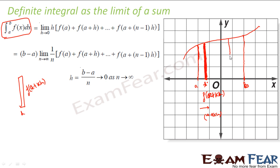We will take more and more such small rectangles. In fact, all this area is composed of rectangles only — that is how we will do it. The width of all these rectangles will be h and the length will be f of a plus kh, where k is variable. For the first rectangle k is 0, so the length will be f of a. Then f of a plus h, f of a plus 2h, and so on.